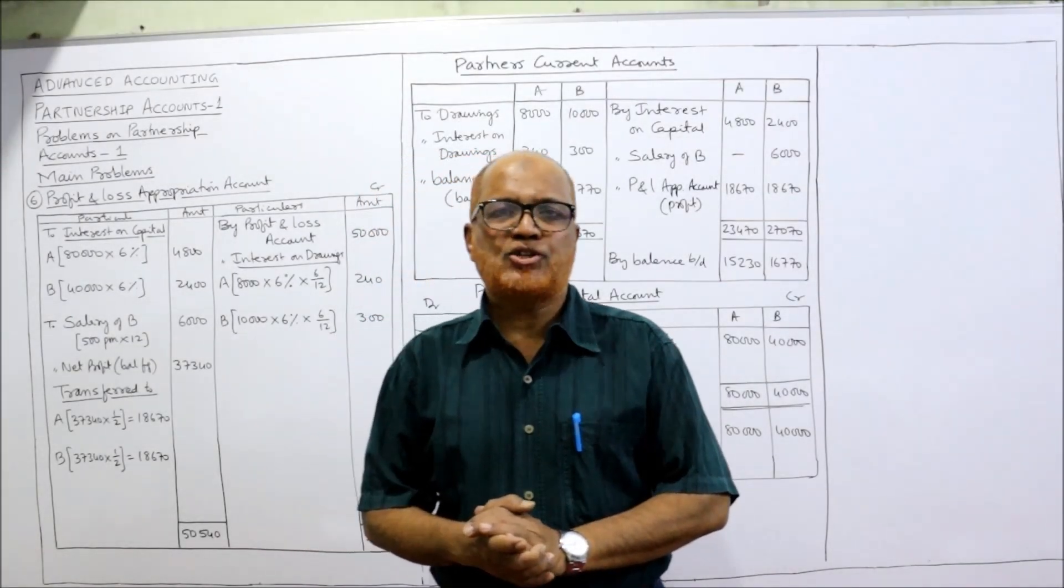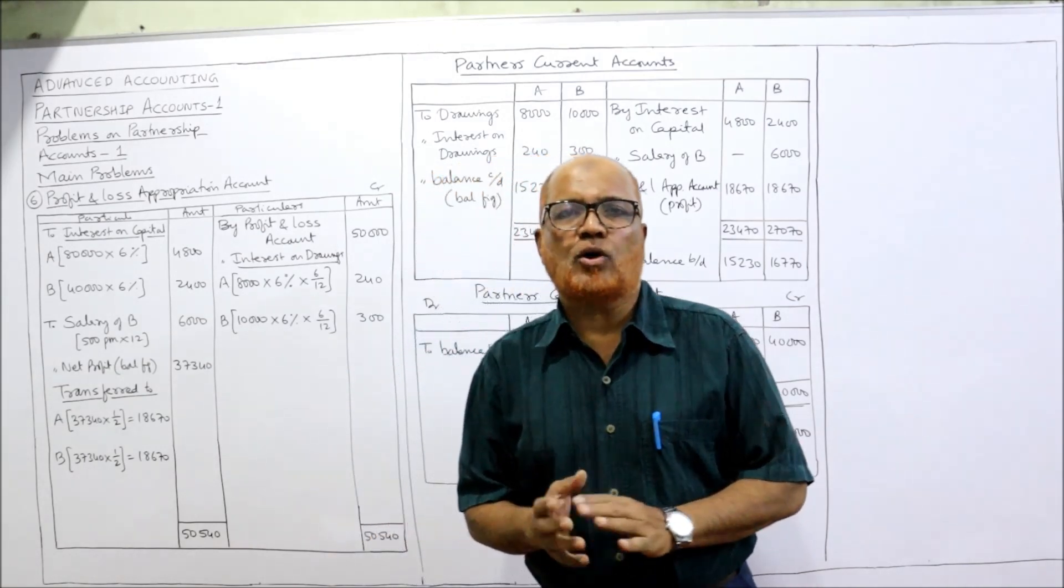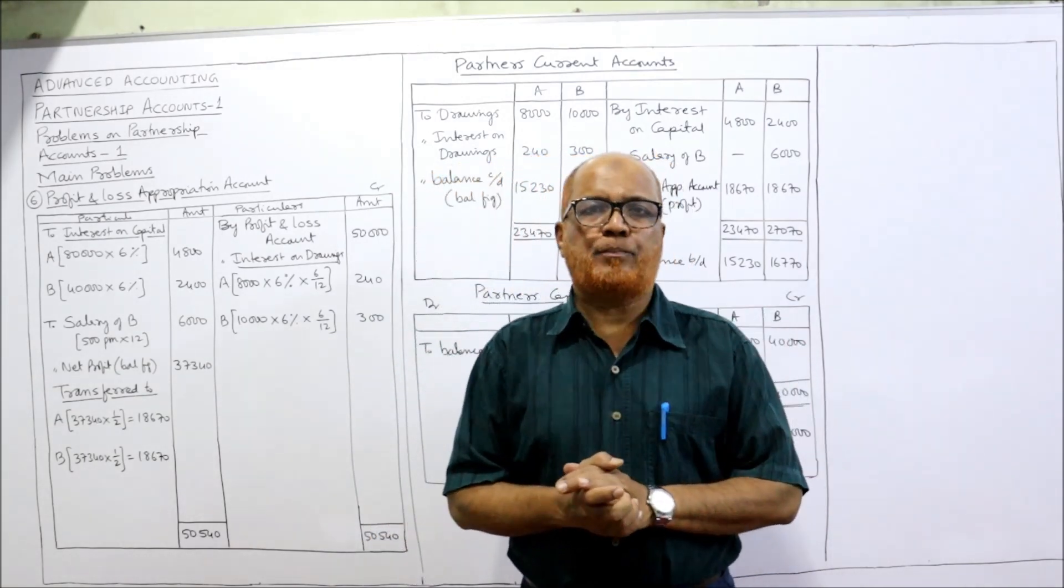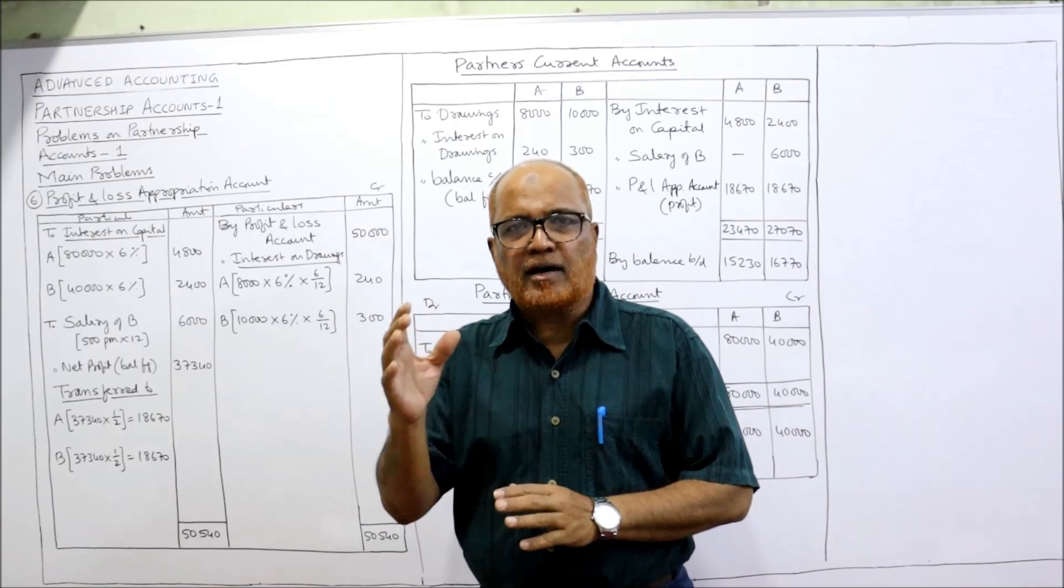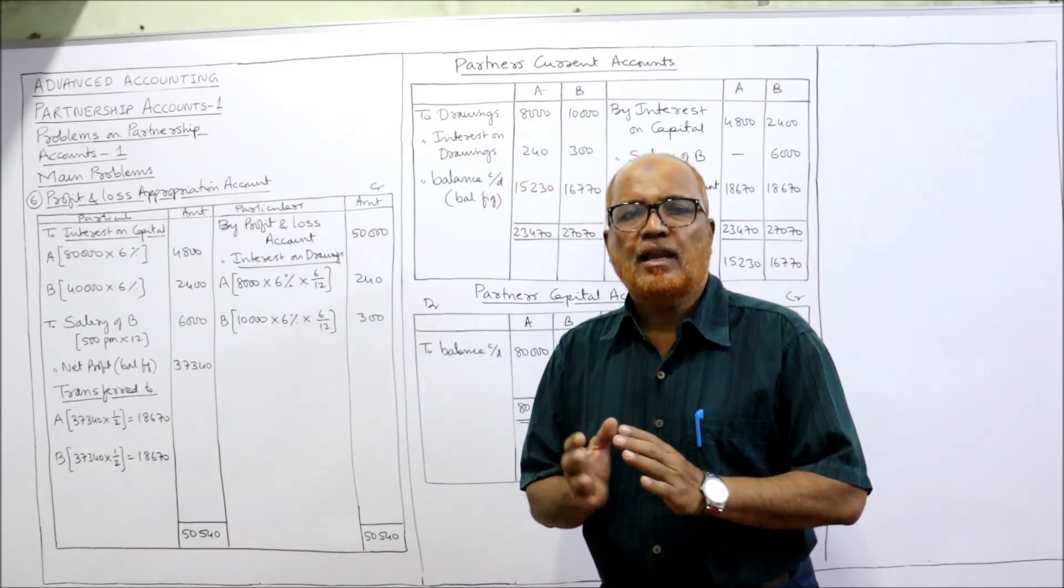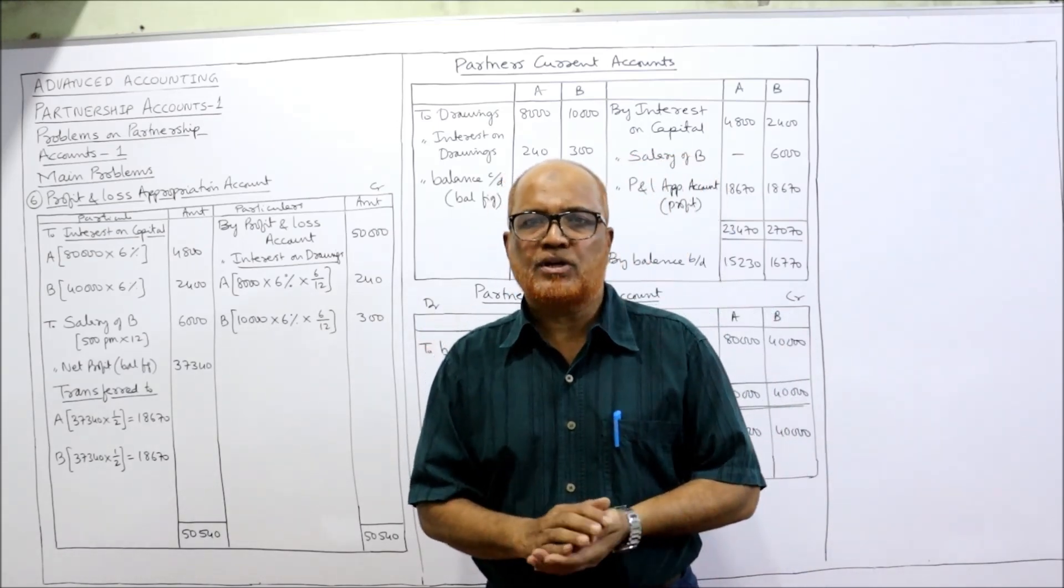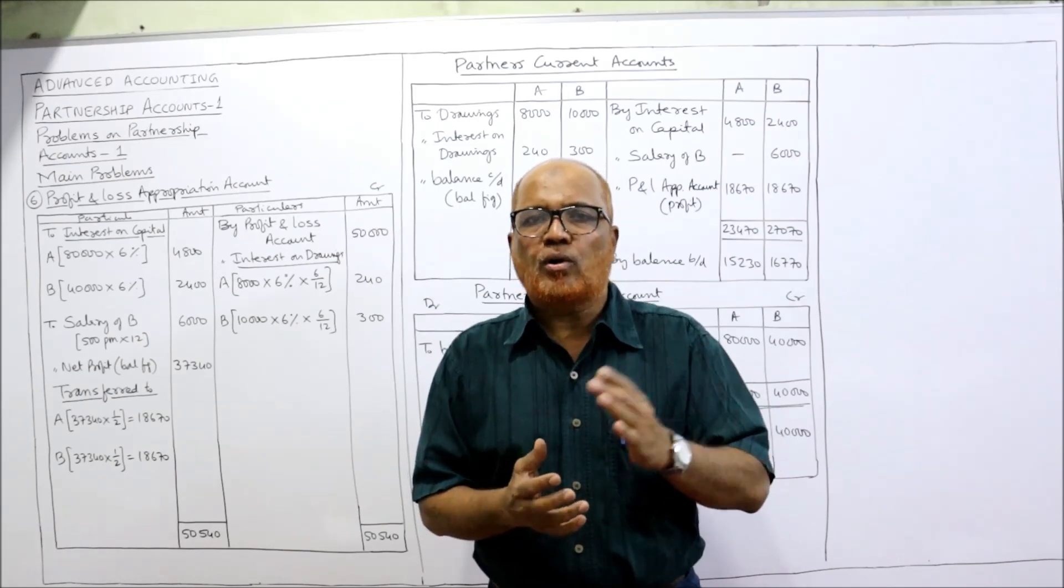Hello viewers, welcome to my channel. I'm Hashem Ali Khan. So far I have completed five problems on preparing the profit and loss appropriation account, current account, and capital account of partners. This is the last video, number six, the problem is the last one on preparation of profit and loss appropriation and current account. Next video onwards we'll start the problems on admission, retirement, and death of partner.